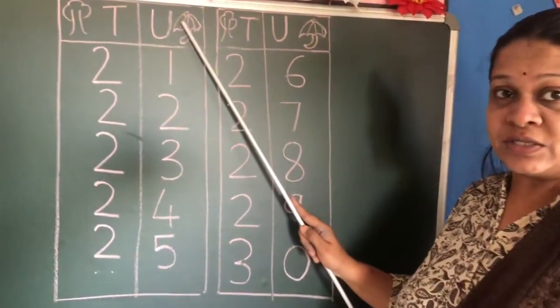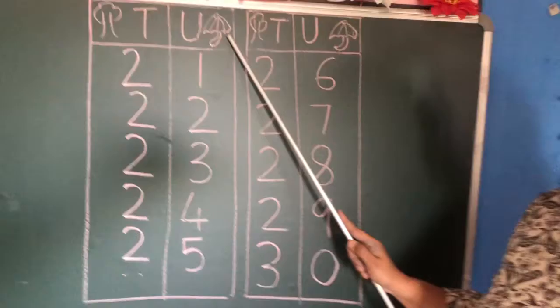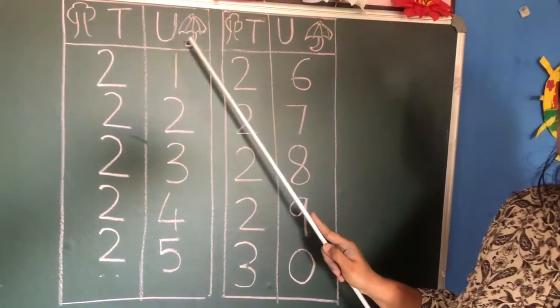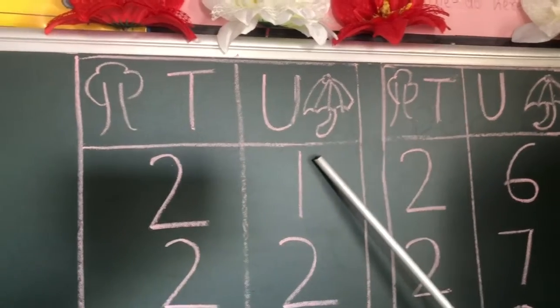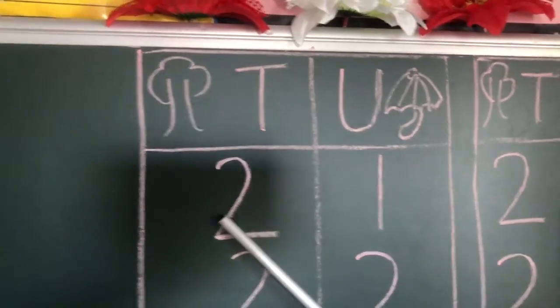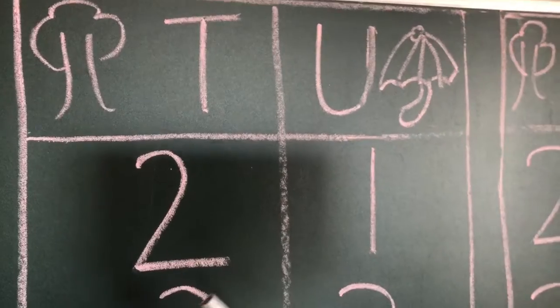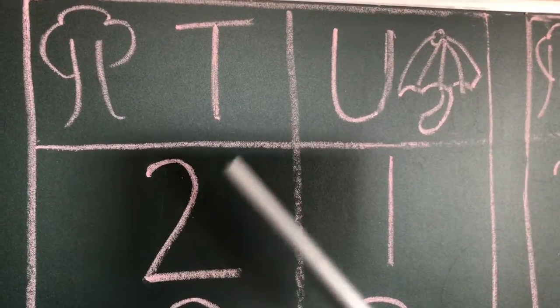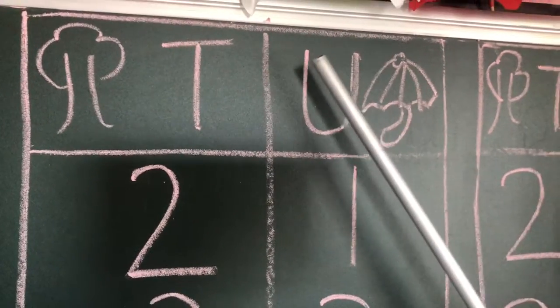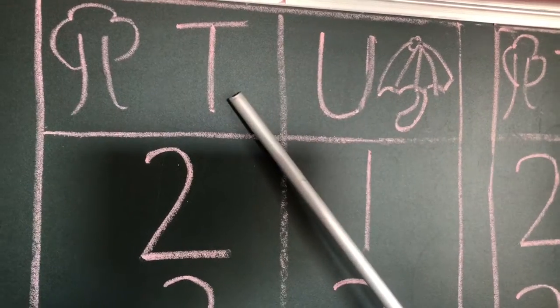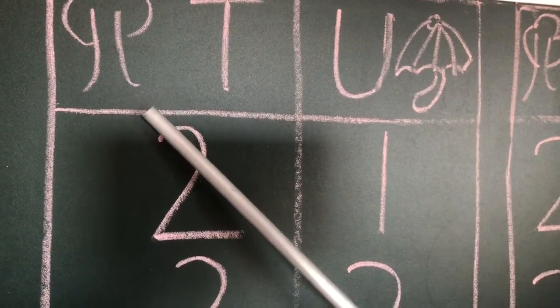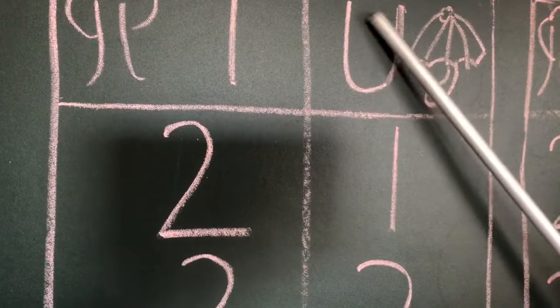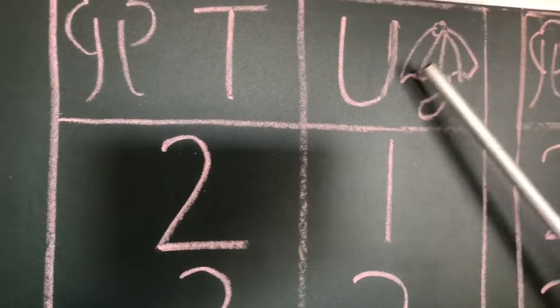Now I am going to teach you why this T is here and why this U is here. See, this is 21. If I am starting with 21, this 2 will be in the tens place because we are sounding it 20. 2 is in the tens place, that is under the tree, and 1 is under the umbrella, that is in the unit place.